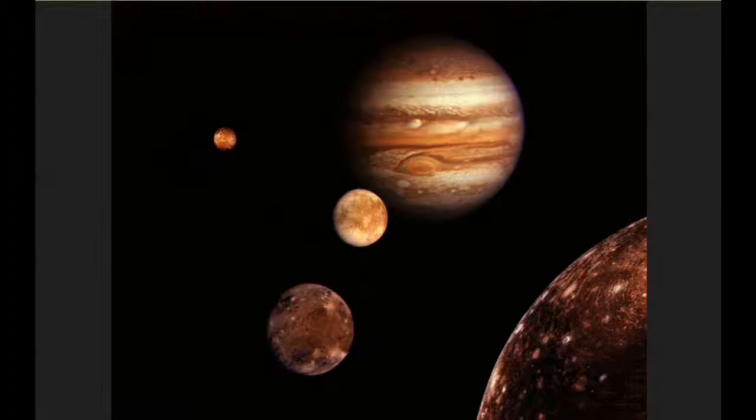So from 21:57 to 22:57, an entire hour, Io and Europa, the moons themselves and their shadows, are all on Jupiter. What a spectacular image that would make.